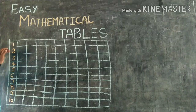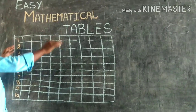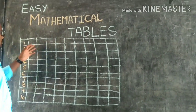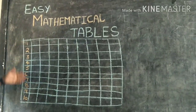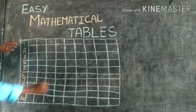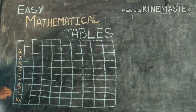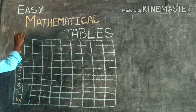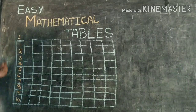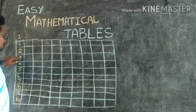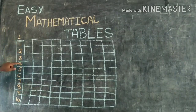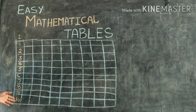First, you just draw a table like this, with numbers one to ten. Coming through the first table: one ones are one, one twos are two, one threes are three, one fours are four, one fives are five — like that, one times up to ten.